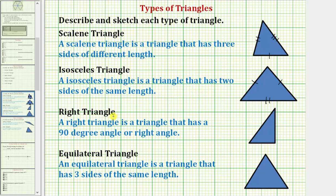Next, we have a right triangle. A right triangle is a triangle that has a 90-degree, or right, angle. Here's a picture of a right triangle. Notice this interior angle measures 90 degrees, which is why this is a right triangle. We'll often see a little square at that corner to indicate the angle measures 90 degrees.